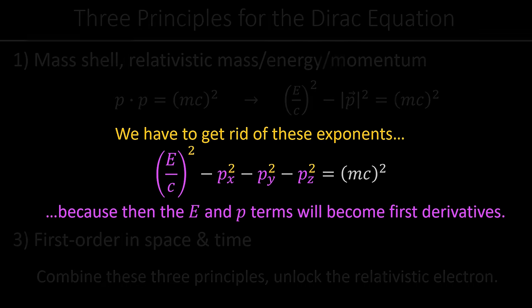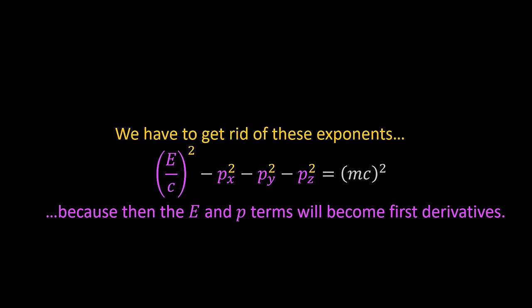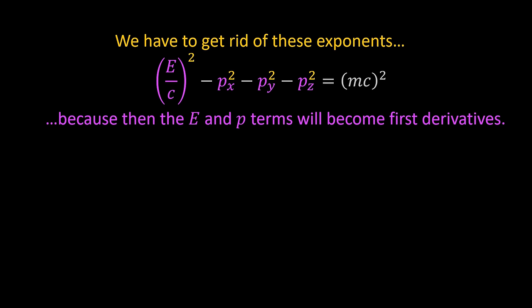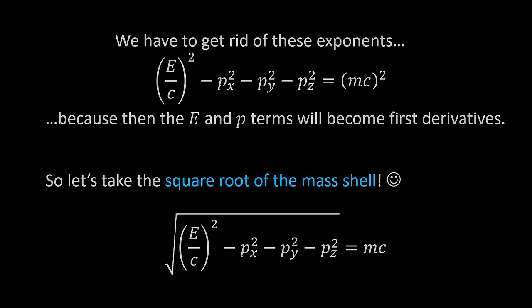Given the mass shell equation, how do we rearrange it so that E and p appear only to the first power? First, why not try taking a square root of both sides? But the problem is: how do you actually factor out that square root? It's not as simple as it looks. So here's what we're going to do — we're going to force that square root to be linear.